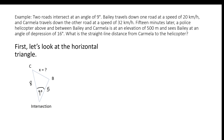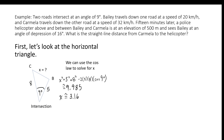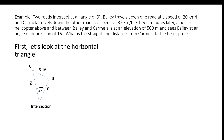This part of the question is a straightforward cosine law calculation. Solving for x, we get that Bailey and Carmela are roughly 3.16 kilometers apart. Now, Bailey and Carmela are both on ground level. Somewhere in between them is the helicopter, and it is elevated. We don't know exactly where — it might be closer to Bailey or closer to Carmela.